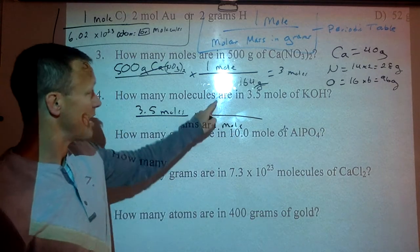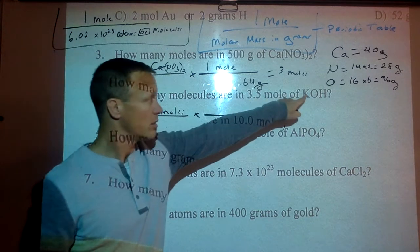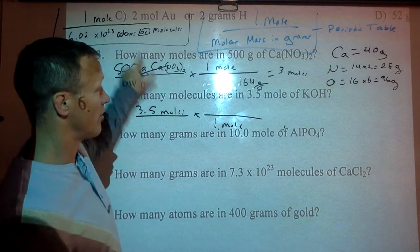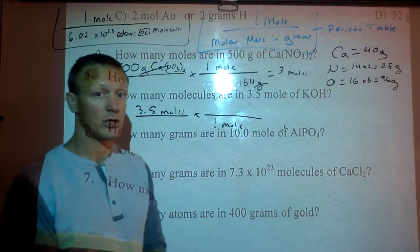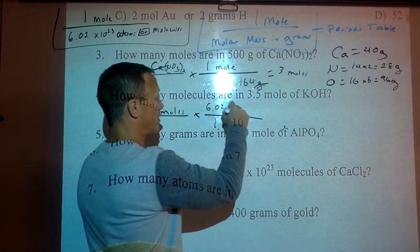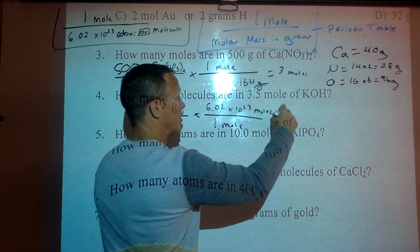So I have two choices to choose from. I either put in the grams from the periodic table, how much a mole of this, what the mass of a mole that is, in grams, or I put in Avogadro's number of representative particles. In this case, it's asking you for molecules. So I'm going to say there's 6.02 times 10^23 molecules.